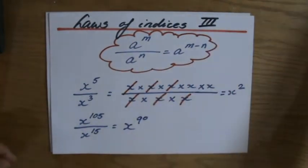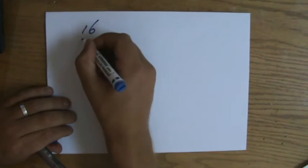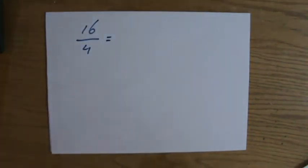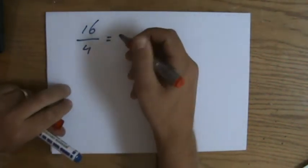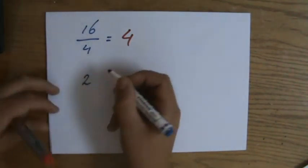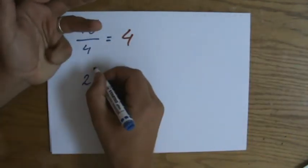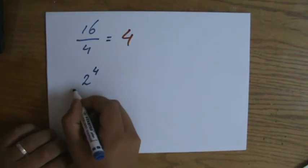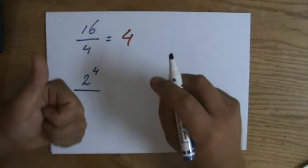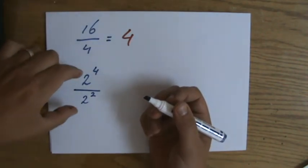Before we get to some example questions, I want to show you one more thing. Let's do 16 divided by 4 — the answer is 4, we all know that. But now I'm going to rewrite this question in index form. 16 is the same as 2 to the power 4, because 2 times 2 is 4, times 2 is 8, times 2 is 16. And 4 in index form is 2 to the power 2. So I've rewritten 16 divided by 4 in index notation.